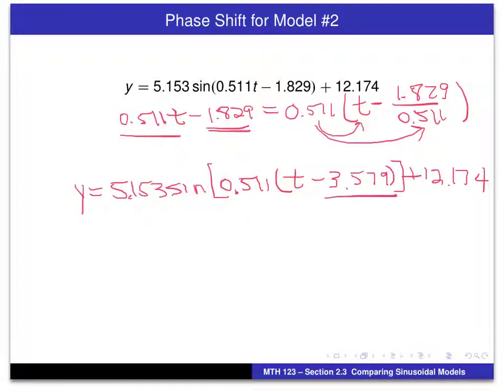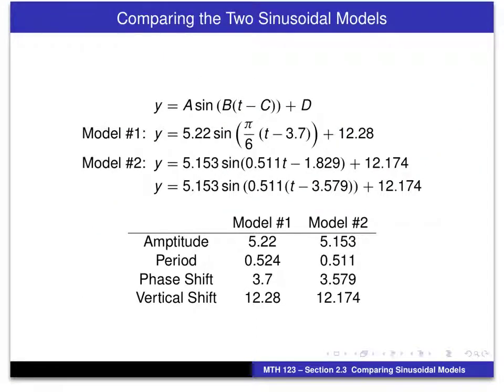So, we now can determine the phase shift as 3.579. And here's a final comparison, then, of our two models. Things we have done before, and the one thing we just completed was determining the phase shift for model number 2.